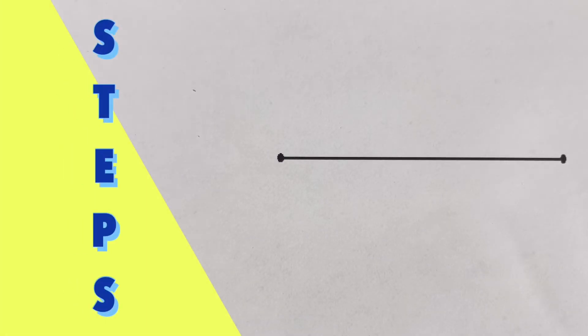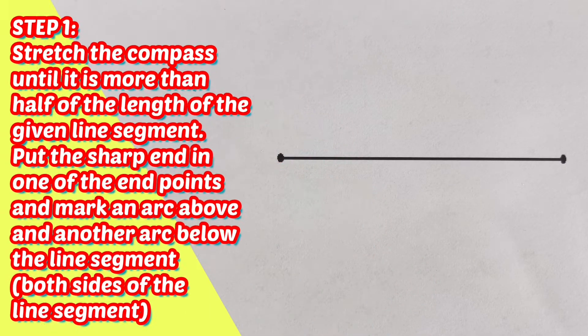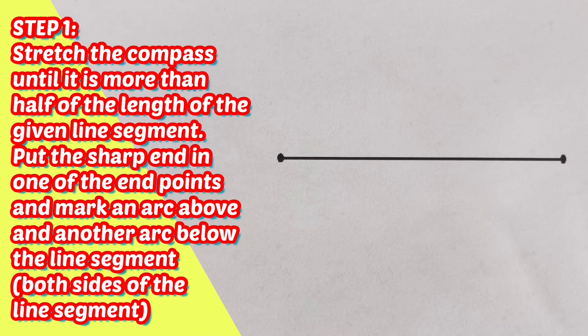There are steps that we need to follow in order that we can construct a midpoint using compass and a straight edge. The first step is to stretch the compass until it is more than half of the length of the given line segment.